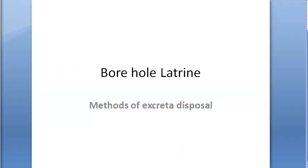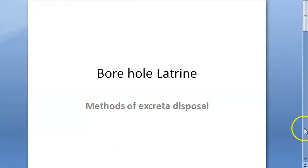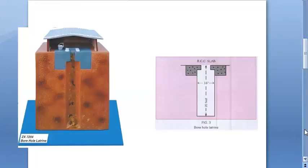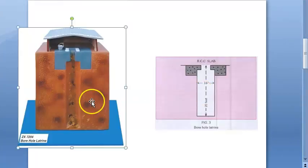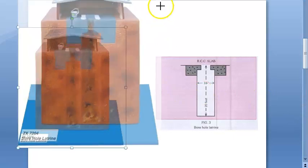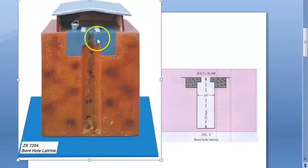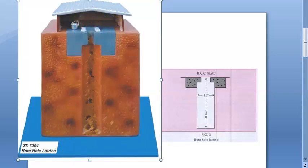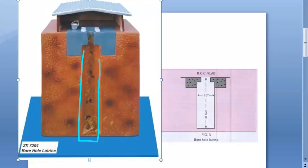In this video we understand borehole latrine, basically a method of disposal of excreta or human waste. It's a type of toilet. You can see in this diagram that there is a toilet where people go — those two white things are the place to keep the legs. People squat over it and any excreta gets deposited in this borehole. There are some dimensions of this as well.